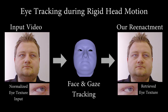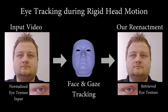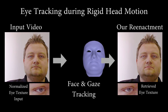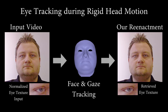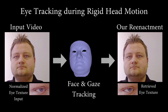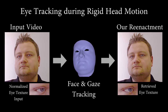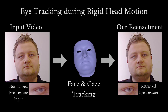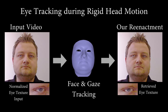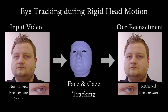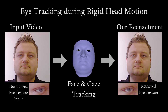Here we show our eye tracking during rigid head motions. On the left, we see the input video and the extracted eye texture that is used to track the eye gaze. With our eye tracker and the reconstructed expression of the source, we reenact the target actor. On the right, we show the final reenactment output, as well as the retrieved eye texture used to synthesize the eyes.